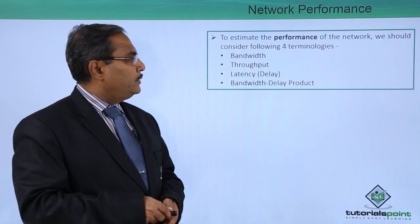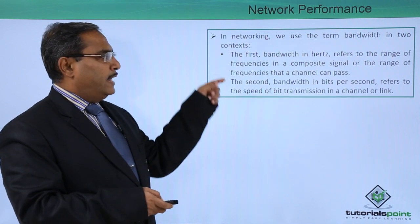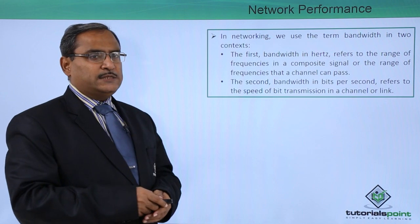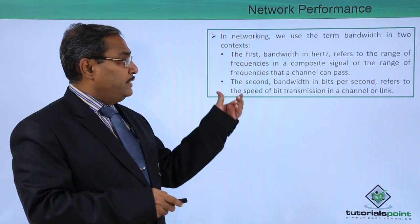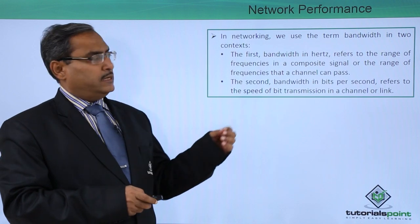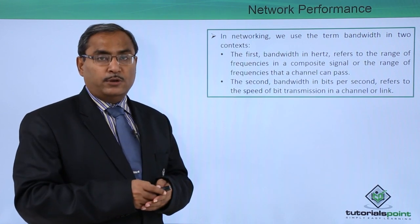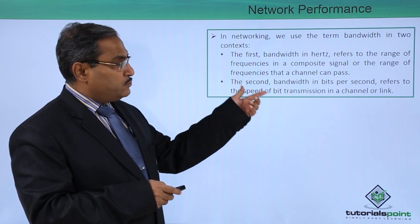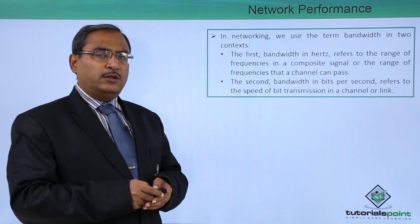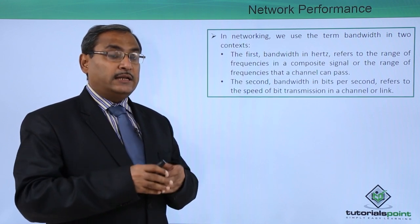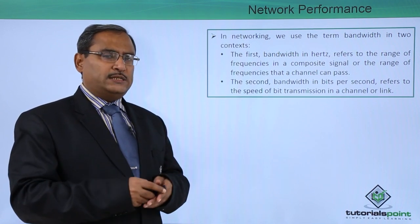Starting with bandwidth — in networking, we use the term bandwidth in two different contexts. In the first context, bandwidth is expressed in Hertz and refers to the range of frequencies a composite signal can have, or the range of frequencies that a channel can pass. Hertz means the number of vibrations per second. This covers both the bandwidth of the signal and the bandwidth of the media, and both are expressed in terms of Hertz.